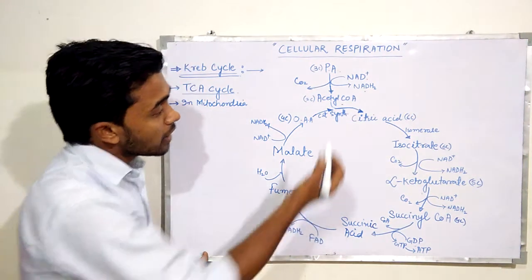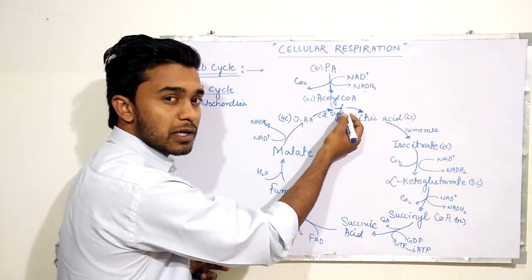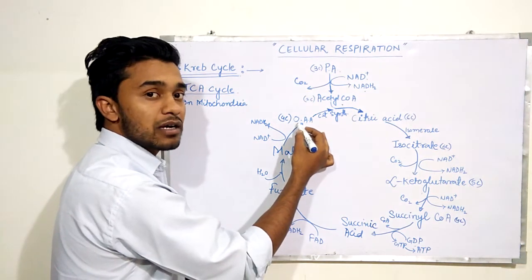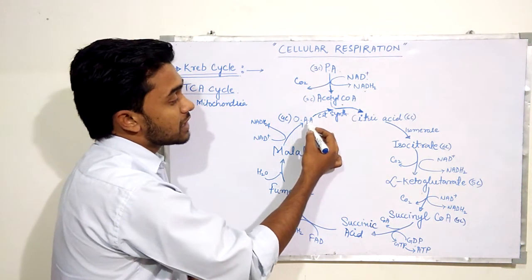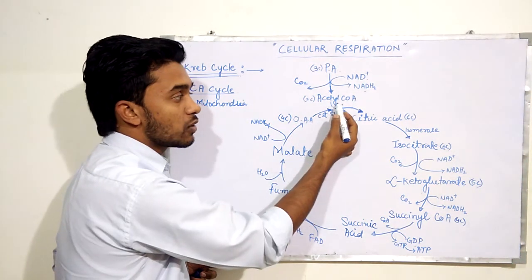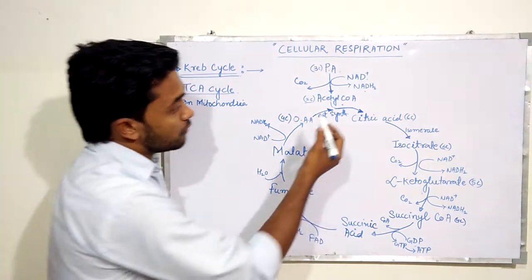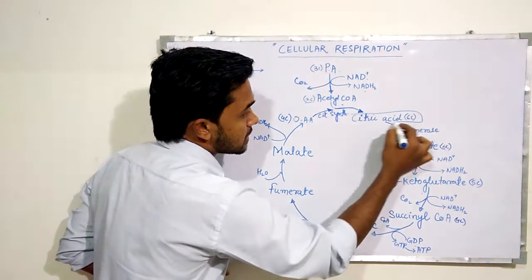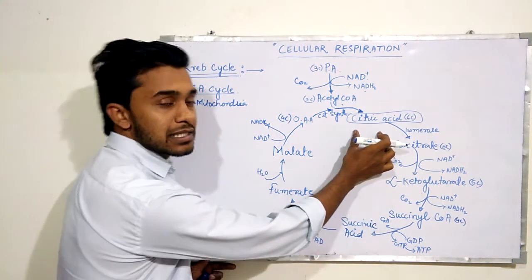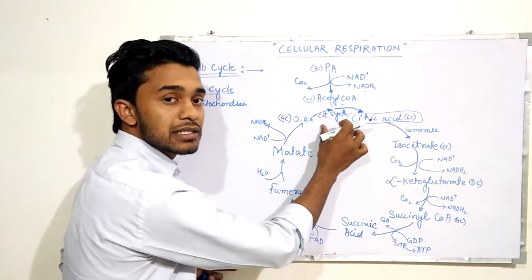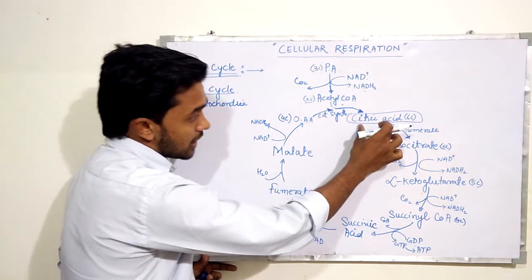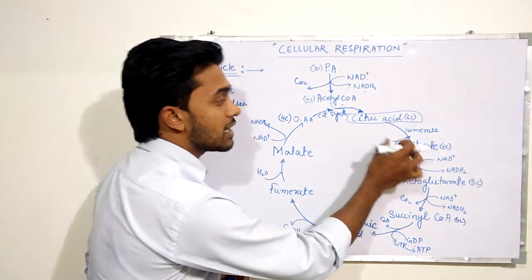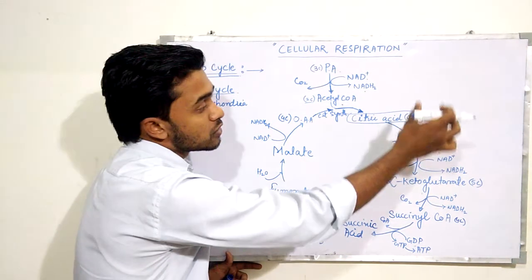Acetyl coenzyme A, a two-carbon compound, takes part in the Krebs cycle — pyruvic acid does not directly enter. Acetyl coenzyme A is accepted by a four-carbon compound named oxaloacetic acid. Together they form a six-carbon compound named citric acid. The enzyme used here is citrate synthetase.